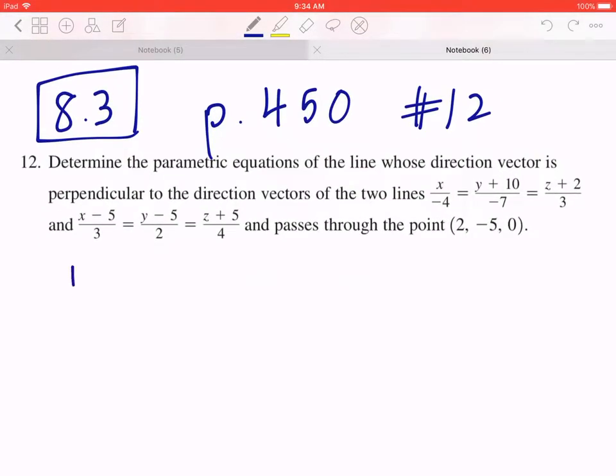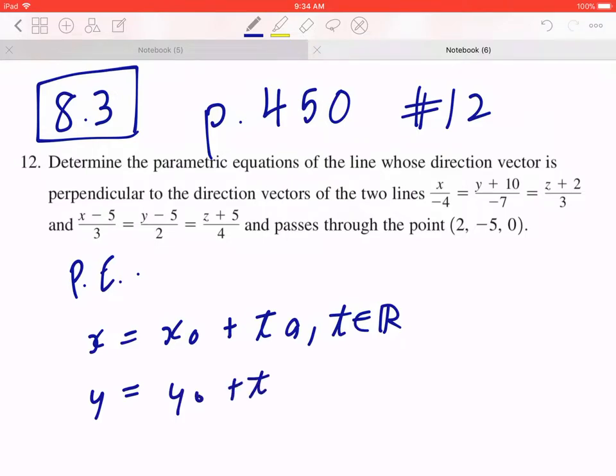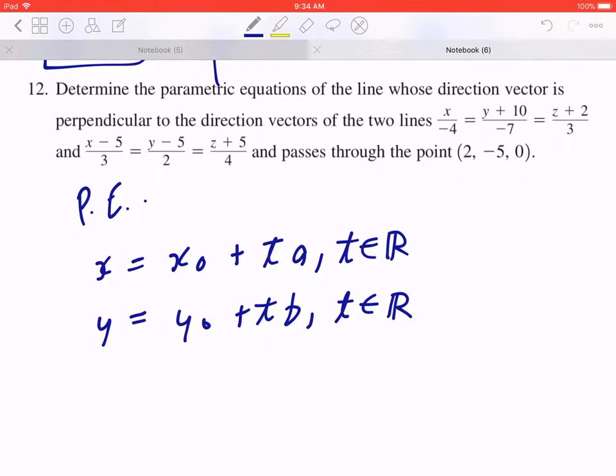Step 1, when you think about the parametric equation of a line, the general format is going to be x equals x₀ plus ta, where t is an element of real numbers; y equals y₀ plus tb, where t is an element of real numbers; and z equals z₀ plus tc, where t is an element of real numbers.